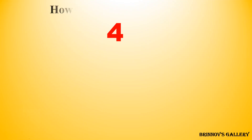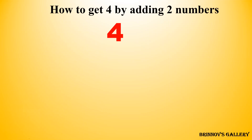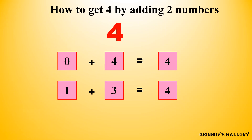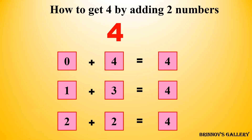How to get 4? By adding two numbers. 0 plus 4 is equal to 4. 1 plus 3 is equal to 4. 2 plus 2 equals 4.